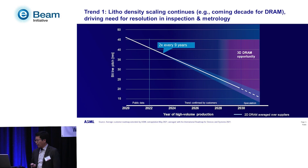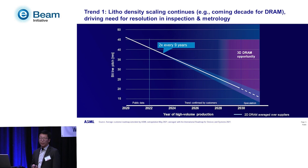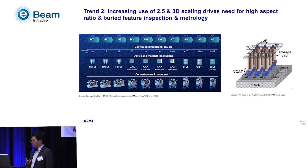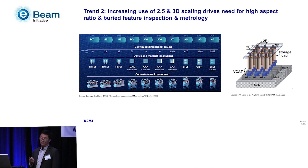These two trends are driven by litho density scaling and transistor density, which also extends into the third dimension. For trend one — litho density scaling — we expect it to continue; looking at DRAM as an example, the shrink will continue well into the next decade, driving additional demand for resolution in both inspection and metrology due to continued pitch shrink. The other trend is the growth of 3D and 2.5D structures, which drives demand for higher landing energy on the e-beam side in order to detect buried defects, high-aspect-ratio defects, and overlay metrology.